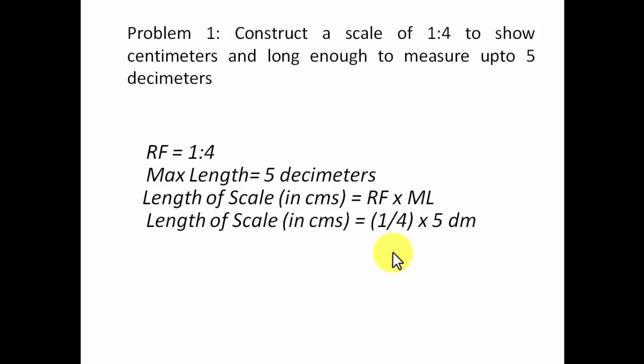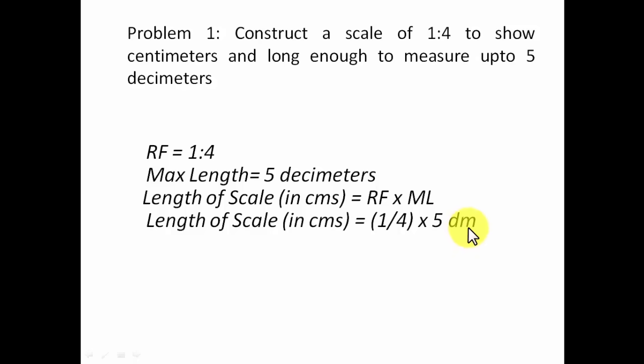Putting in all the values: RF has no units, maximum length is five decimeters, so 5 divided by 4 gives 1.25 decimeters. However, since our physical scale is in centimeters, we need to convert. One decimeter equals 10 centimeters, so in place of decimeters we write 10 centimeters. The calculation becomes 5 × 10 = 50 over 4, which equals 12.5 centimeters. The length of our scale is 12.5 centimeters.